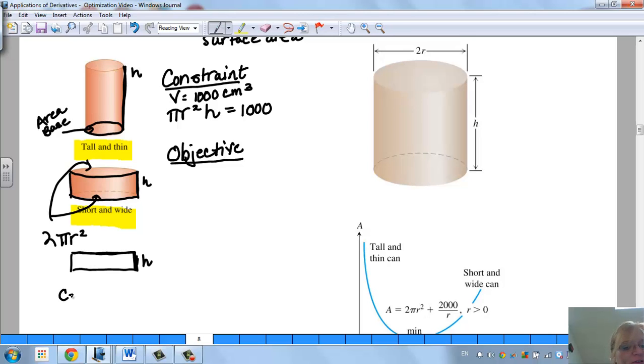Circumference is pi d. But since everything has an r in it, we can call it circumference is 2 pi r. So what is the surface area? The surface area is going to be 2 pi r squared, that's the top and bottom, plus 2 pi r times the height. There is our surface area equation.